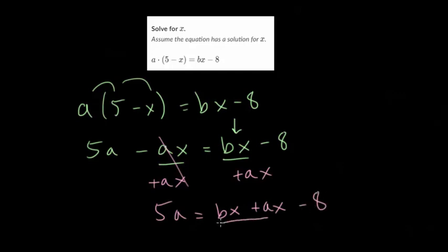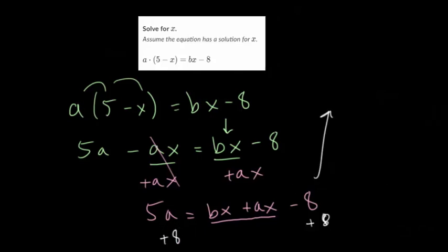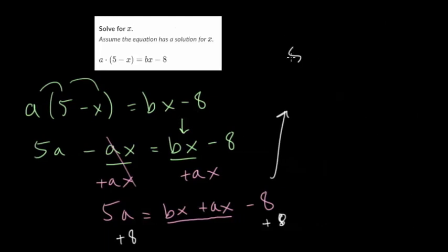The third step will be to get rid of everything else that's on the side with the x's and move it to the other side. Once you get the x's together, anything that's not an x term, you want to move to the other side. So we want to move this minus eight. And we'll do that with addition. So plus eight on each side. So you get five a plus eight equals bx plus ax.